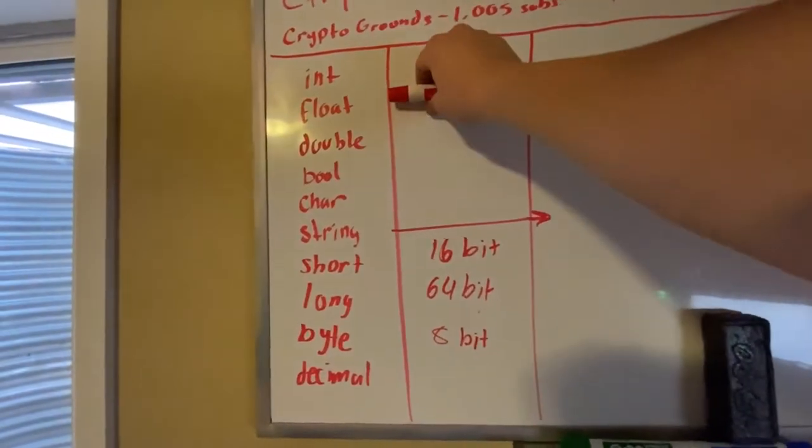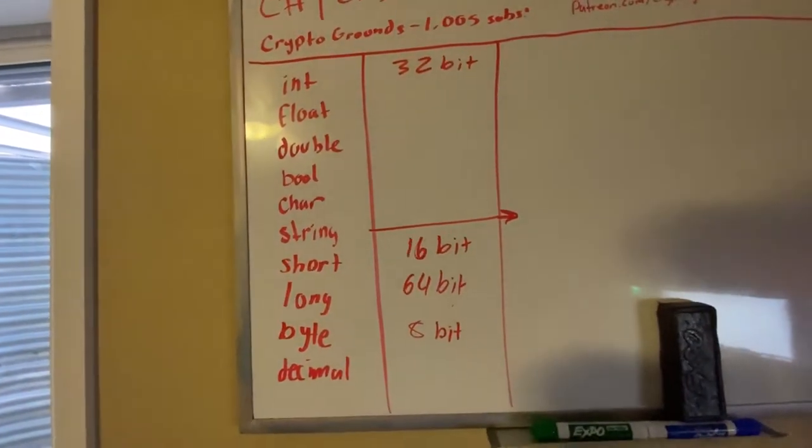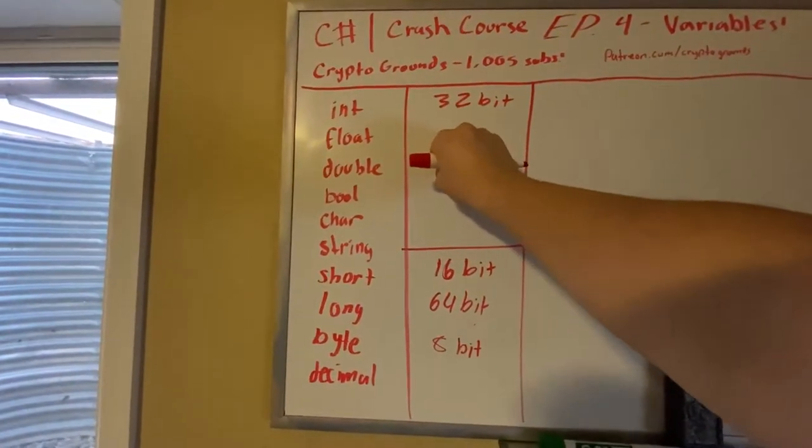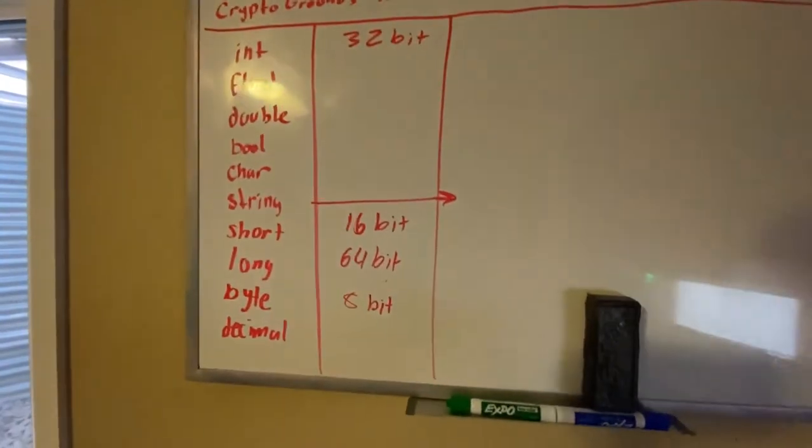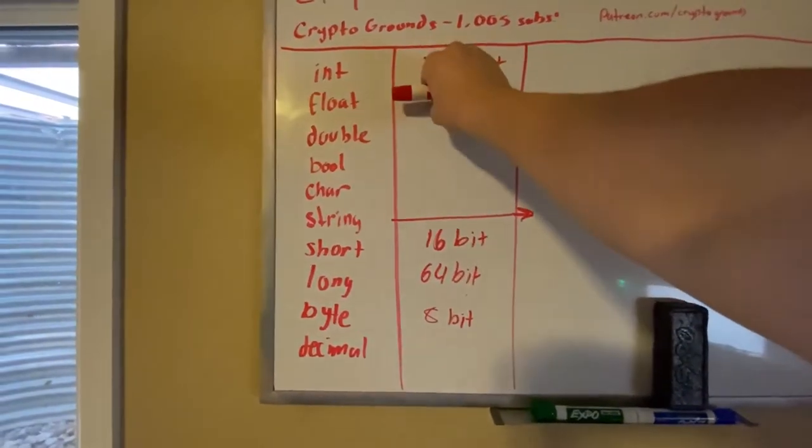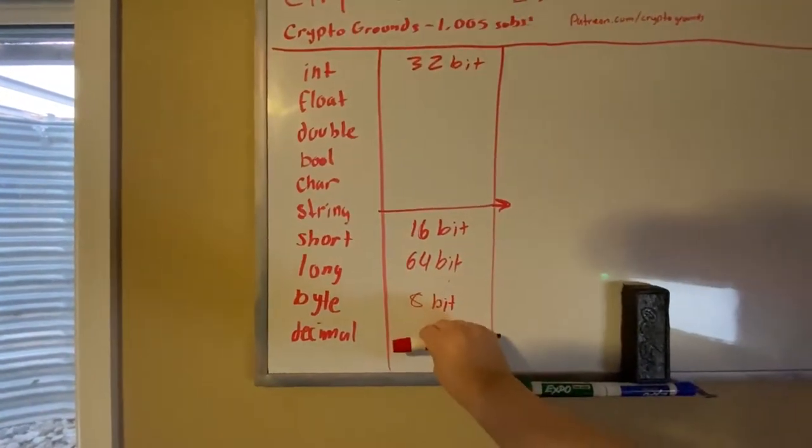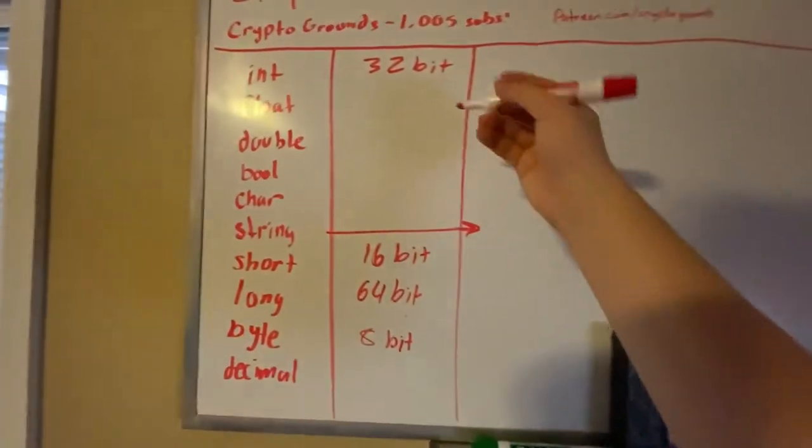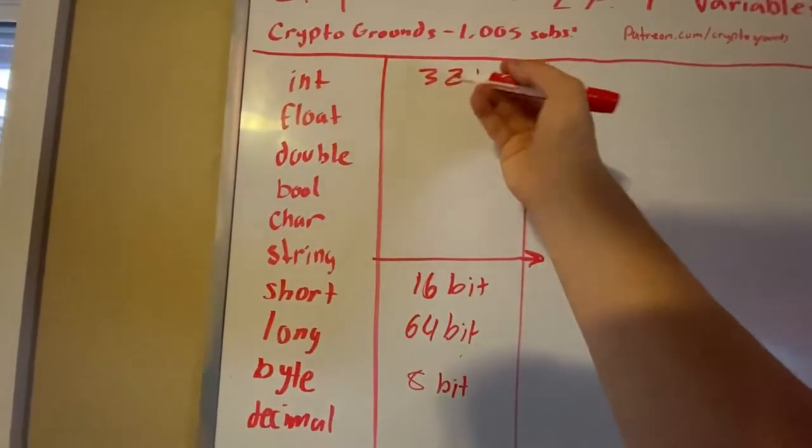Now we have our floating point numbers or variables: float, double, and decimal. Basically double can store the most and has the second most decimal precision. Float has the least and decimal has the most precision but decimal stores the least amount.